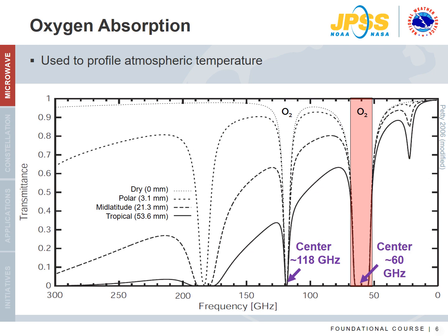Let's first focus on oxygen absorption. A strong absorption band due to molecular oxygen is centered at 60 GHz. This band plays an important role in satellite retrievals of atmospheric temperature profiles. A second, narrower oxygen band is also present at 118 GHz. Strong absorption results in an opaque atmosphere at the centers of both bands. An atmospheric temperature profile is obtained when measurements are captured for a series of closely spaced narrow frequency ranges on the edge of a strong oxygen absorption band, in this case near 60 GHz.